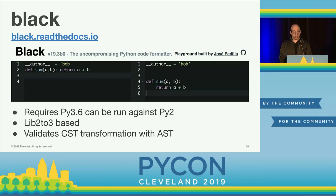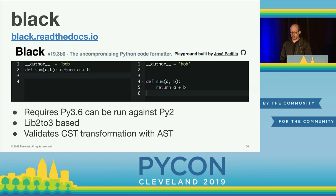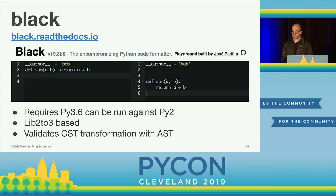Another really popular tool is Black — the uncompromising Python code formatter. It requires Python 3.6 but runs against Python 2 code as well, and uses a fork of lib2to3. Currently at Pinterest we don't use it, but we're looking to adopt it soon. Interestingly, Black validates the concrete syntax tree transformations it makes against the abstract syntax tree — the idea being that style changes should not change the meaning of the code, so the AST before and after should still map up. This is an elegant use of syntax trees, rather than having flake8 report errors you fix manually.